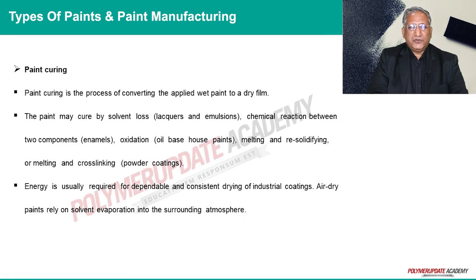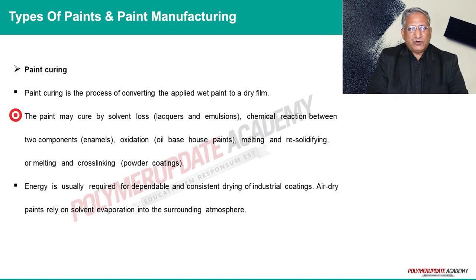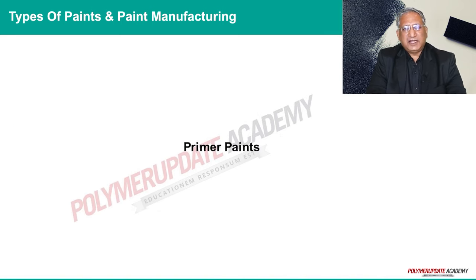Paint curing is the process of converting the applied wet film to a dry film. Paint may cure by evaporation of solvent — for example, lacquers and emulsions — or by chemical reaction between two components, such as enamels, or by oxidation in the case of oil-based house paints. Paint can also cure by melting and re-solidifying, or melting and cross-linking, in the case of powder coatings.